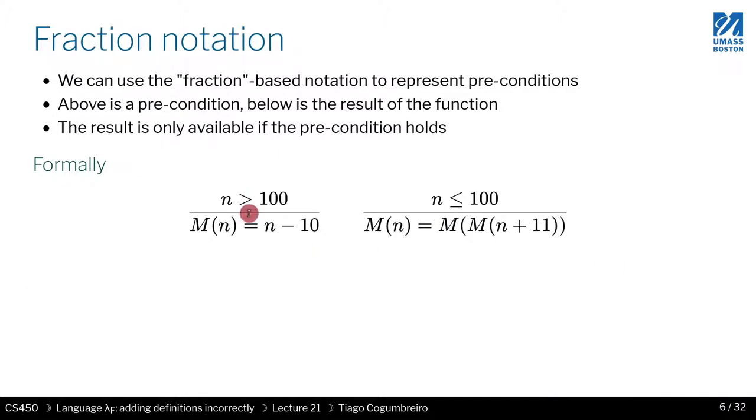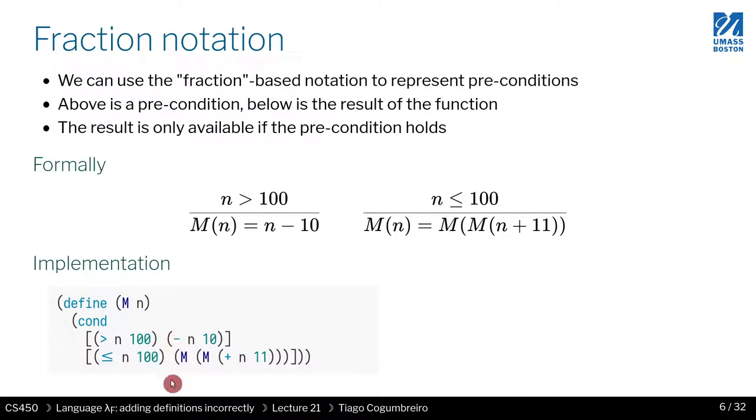Another way to describe a function is with this fraction notation, where we write the precondition above the result. Precondition here, and on the right-hand side, we put the result that is being returned. Very simply, you get the same code in this case. The condition here will match here and the return appears here. Same with this other branch. Branch condition appears in the beginning of the branch, and the body is what you see on the right-hand side of the equals.